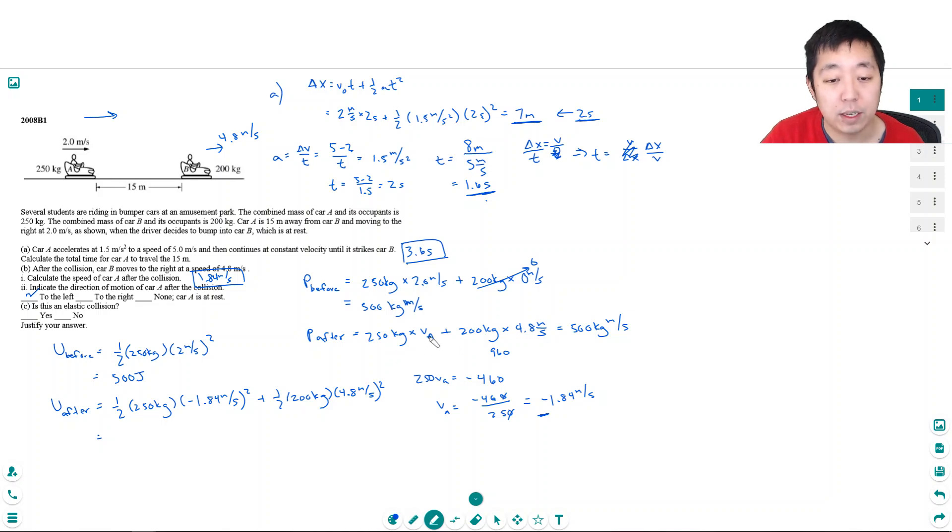So I messed up the math here. This should have been 5. So this should have been 1250. This should have been 1250. Let's just do some corrections. 1250 minus 960, I was going to say the number is going to turn out really weird. 290. So this is 290. This is actually positive. 290 divided by 250 is 1.16. So this should be 1.16 meters per second, and it's actually not to the left, it's to the right because the velocity is positive now. Okay, that makes more sense.